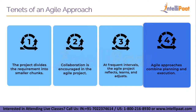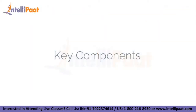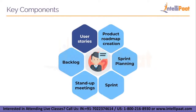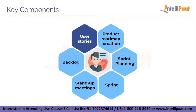Agile project management primarily has six key components. The first is user stories. Simply put, a user story is a high-level description of a task. It gives just enough information for the team to come up with a credible estimate of the time it will take to complete the request. This brief, straightforward explanation is written from the user's point of view.